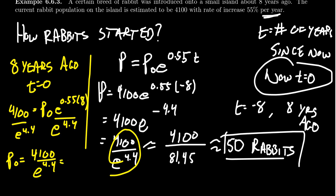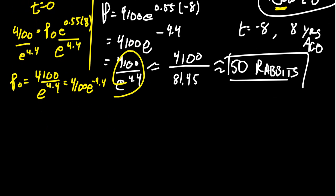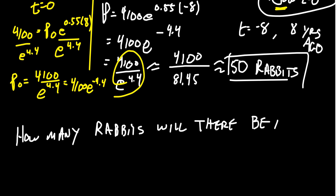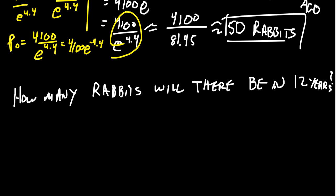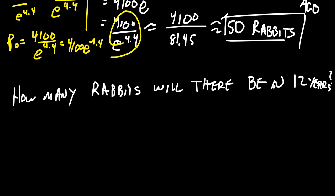This gives us that the initial population was 4100 divided by e^4.4. Dividing by an exponential is just using a negative exponent, so you get 4100 times e^(-4.4). Whichever approach you take, it doesn't matter what t equals zero means - does it mean now or eight years ago - just be consistent. Pick a model and go with it. So we answered this question. Now let's ask the question: how many rabbits will there be in 12 years?